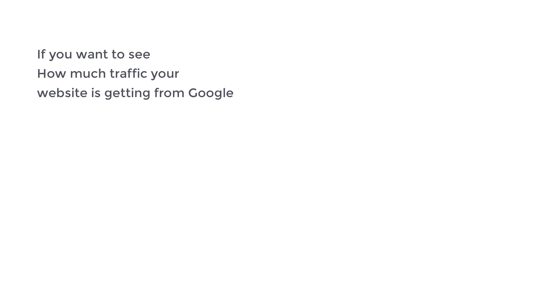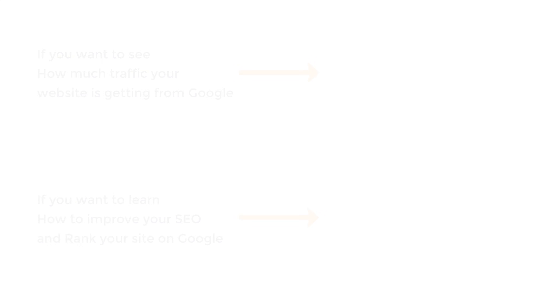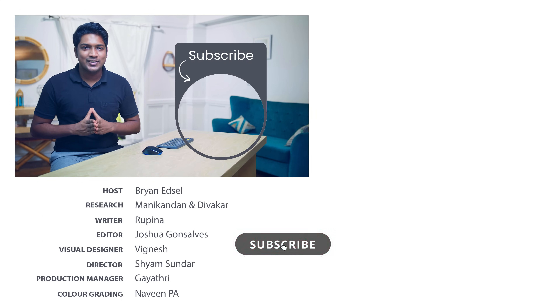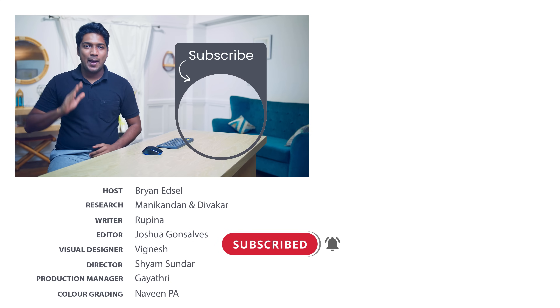So that's it guys — now you know how you can find low competition keywords for your website. If you want to see how much traffic your website is getting from Google, you can watch this video. And if you want to learn how to improve your SEO and rank your site on Google, you can watch this video. Also make sure you subscribe to Website Learners to get more videos like this one. Thanks for watching — I'll see you in the next video. Take care, bye!